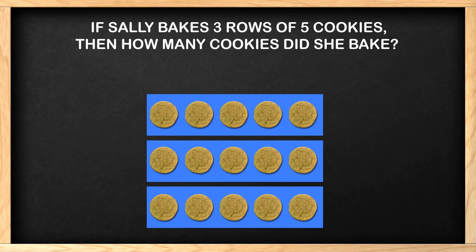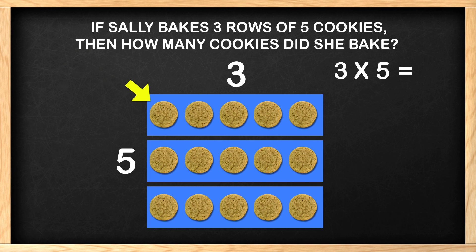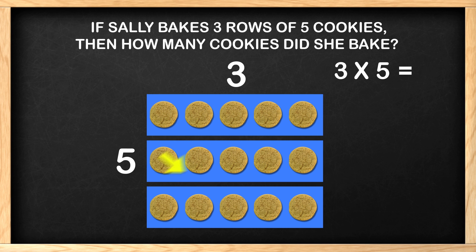You may have noticed that this is a multiplication problem. We have three rows with five cookies in each row. The multiplication problem is three times five equals blank, or what we do not know. We can now solve the problem in a couple of ways. We can count the cookies. There are one, two, three, four, five, six, seven, eight, nine, ten, eleven, twelve, thirteen, fourteen, fifteen.